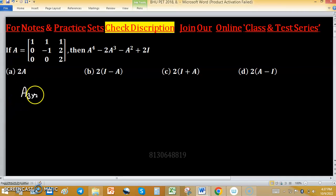Given matrix A of size 3 by 3, then we have to find A raised to the power 4 minus 2A cube minus A square plus 2 times identity.